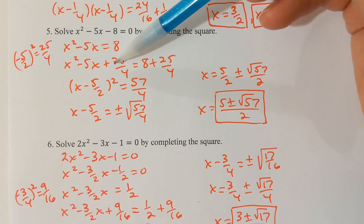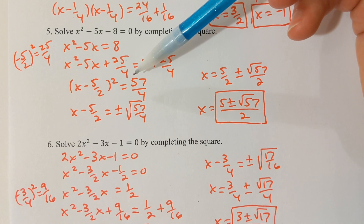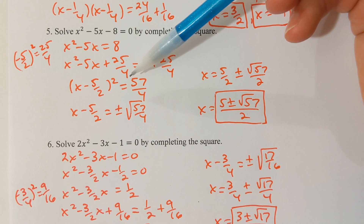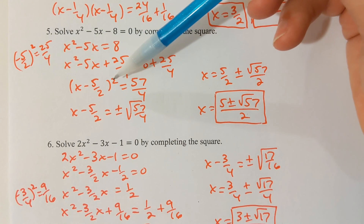The left side will always factor and the factors will always be the same. I can get the factors instantaneously — I know right away it's going to factor as x - 5/2 times x - 5/2, or (x - 5/2)².